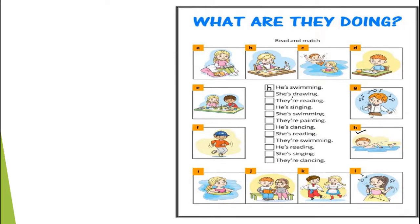Second sentence: she is drawing. The picture for this sentence is here at B. Next sentence: they are reading. Look for the picture for this sentence — and here it is, at J. Next sentence: he is singing. And the picture for this sentence is here at G.